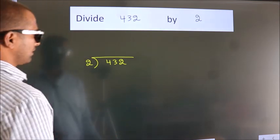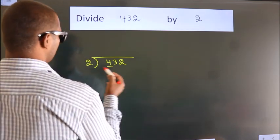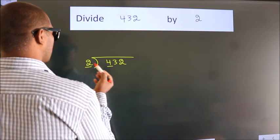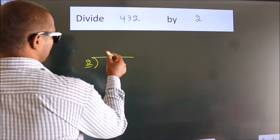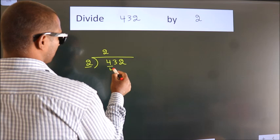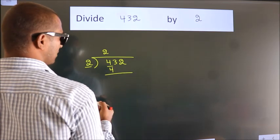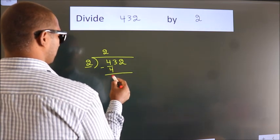Next. Here we have 4, here 2. When do we get 4? In 2 table, 2 times 2 is 4. Now we should subtract. We get 0.